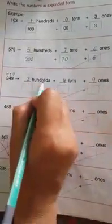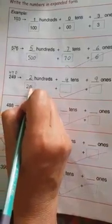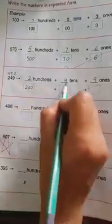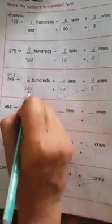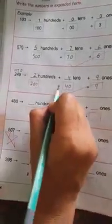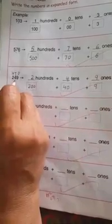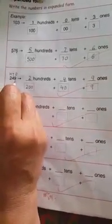Now is it easy? Yes. 2 hundreds — we will write 200. 4 tens is 40. 9 ones is 9. So 200 plus 40 plus 9 will become 249.